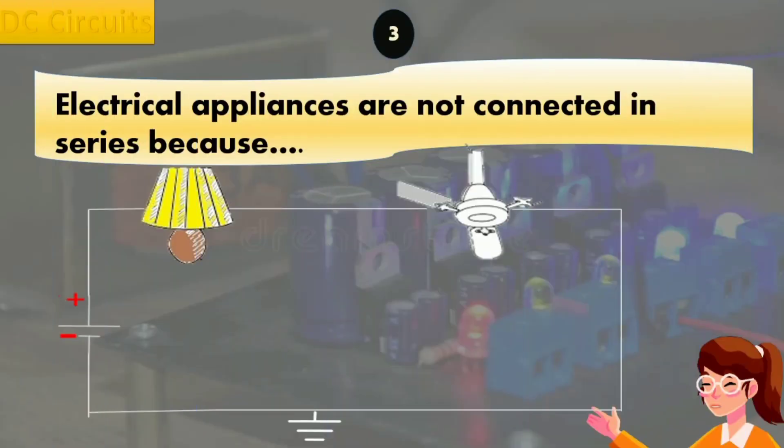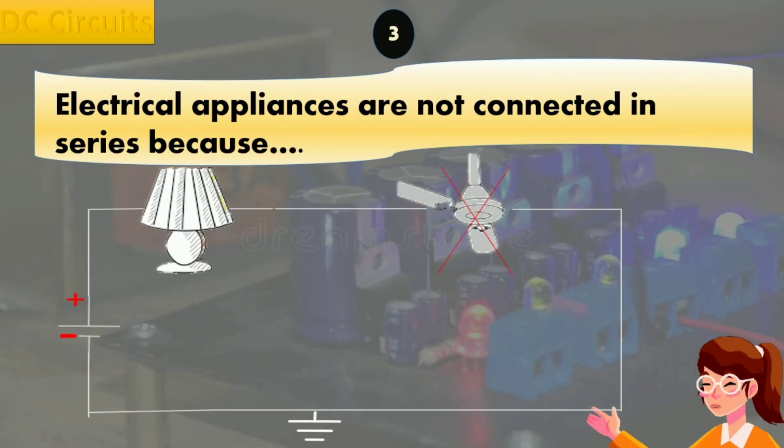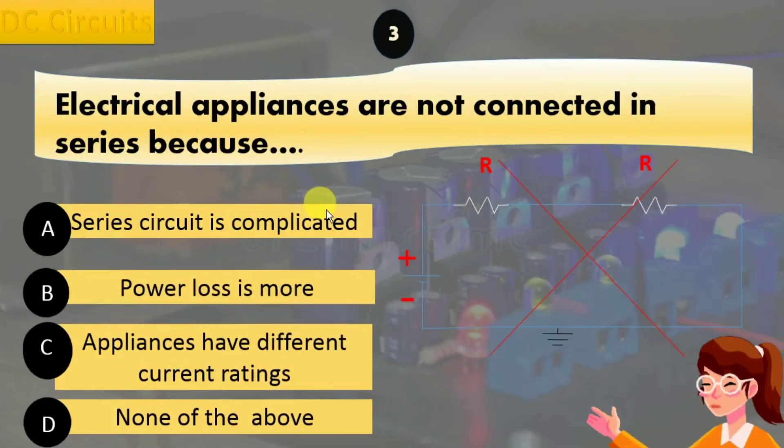Now moving towards the third reason: if one appliance stops working, all other appliances will also stop working because the circuit will then become open and no current flows in the circuit. Hence, according to the options, we can see that electrical appliances are not connected in series because appliances have different current ratings.